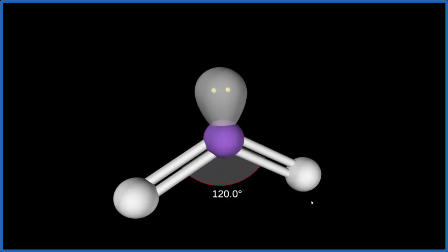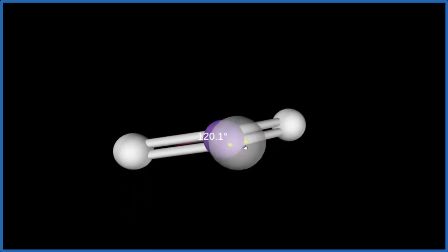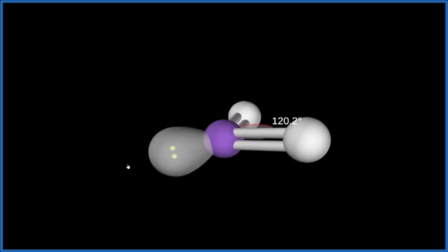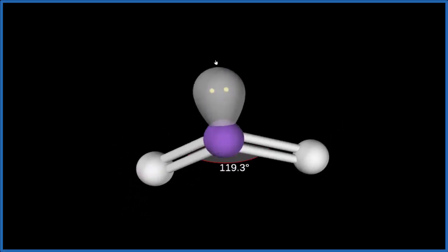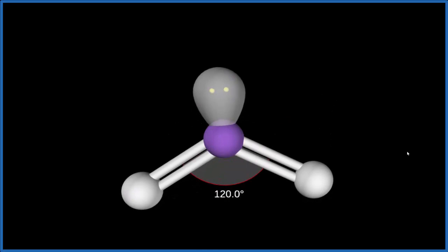If you looked at the electron geometry, the geometry taking into account this pair of electrons, that would be trigonal planar. You can see they're all in the same plane. But just looking at the atoms, that's a bent molecular geometry.